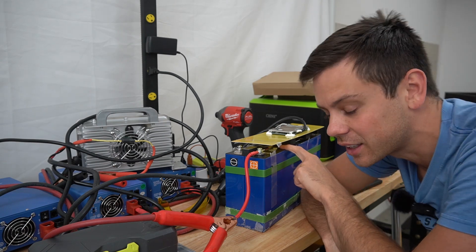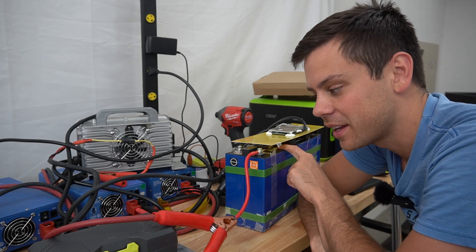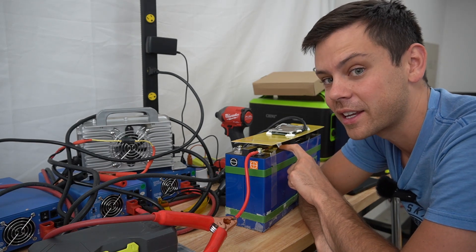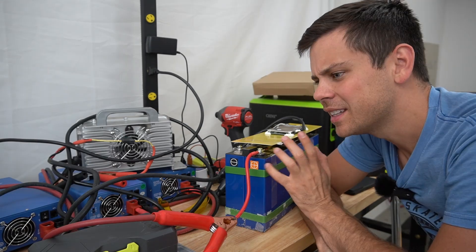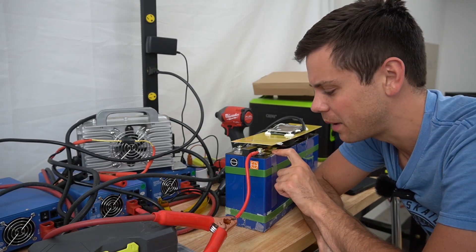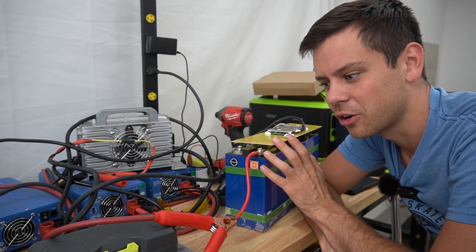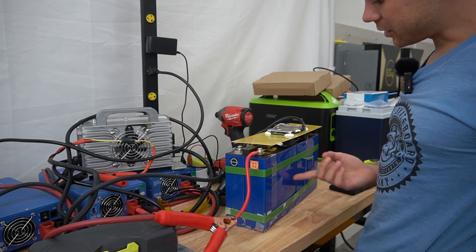Usually when they have a sticker, that machine that does the capacity test results is a lot more accurate than anything I have in my shop. It's down to like a thousandth of an amp hour and mine only does like 0.01 or whatnot. But they could be lying so let's find out.